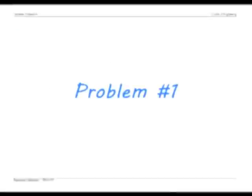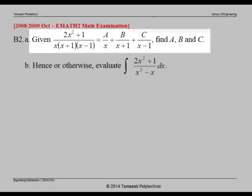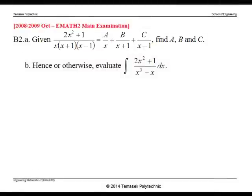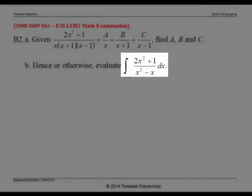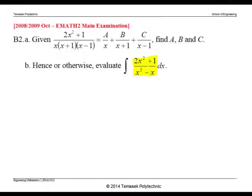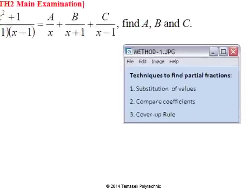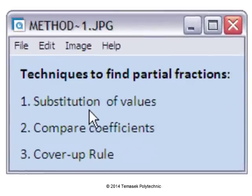We shall look at some past-year problems involving partial fractions. In this problem, part A asks us to find the partial fractions by finding the unknowns a, b, and c. Part B asks us to evaluate the integral which, on closer look, is the same fraction as part A. There are several ways to find a, b, and c: substitution, compare coefficients, or the cover-up rule. Let's start with substitution.